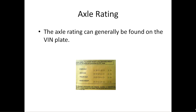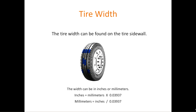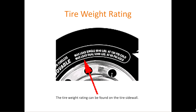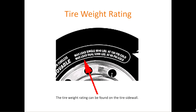The axle rating can generally be found on the bin plate on the vehicle. The tire width can be found on the tire sidewall — the width can be in inches or millimeters. The tire weight rating can also be found on the tire sidewall. For example, each of these two axles has four wheels on it.